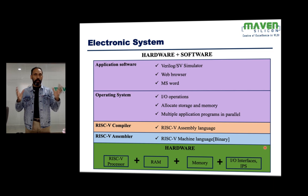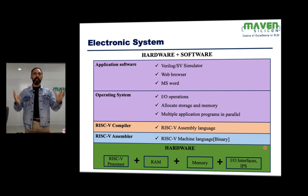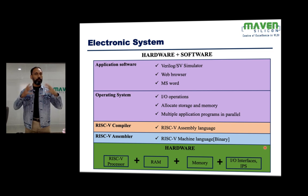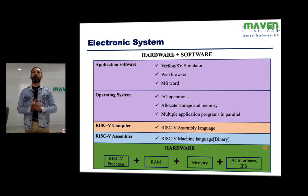Take any complex electronic system — it is basically composed of hardware and software. We create hardware using a complex system on chip, which will have almost all the components needed for the electronic system. The processor is the main component; all applications will be converted into processor instructions and eventually executed by the processor.